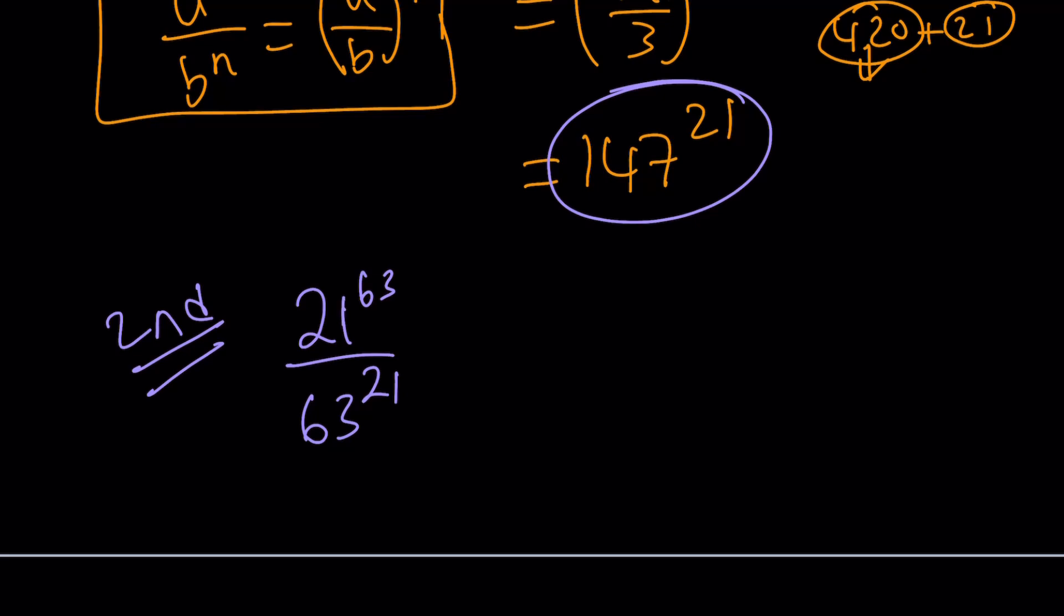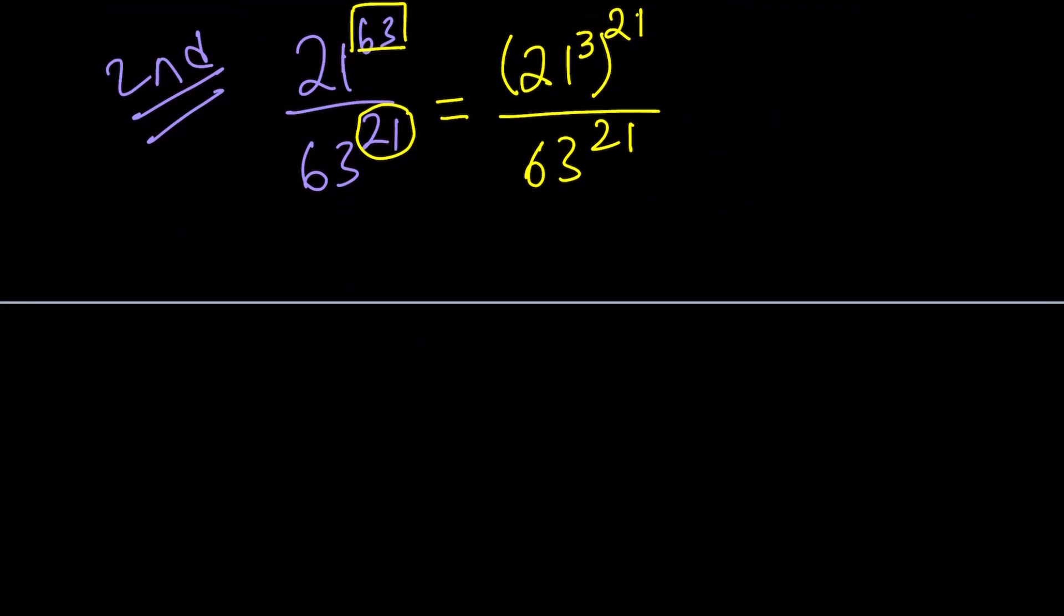To be able to use the exponents, I kind of have to turn this 63 into 21 because my exponent is 21 here. So I can do that because 63 is 3 times 21. I can write this as 21 to the third power to the power of 21. I'm sorry, not divided by. Because 3 times 21 is 63. This should work. And now I got this. You may not know what 21 cubed is. I don't know what it is. So you can do the following. Since they both have the same exponent, I can write it as (21 to the third divided by 63) to the power of 21.